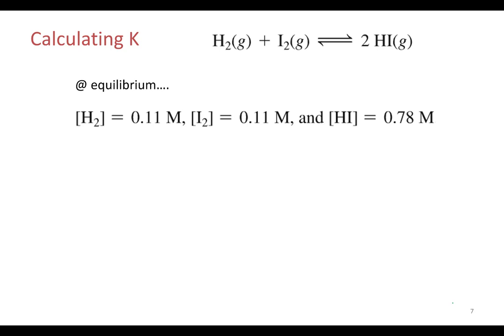First things first, we've got to write our expression. That's going to be different for every single equilibrium system. So, let's write it out first. It's going to be concentration of products, HI squared, all over hydrogen times iodine.